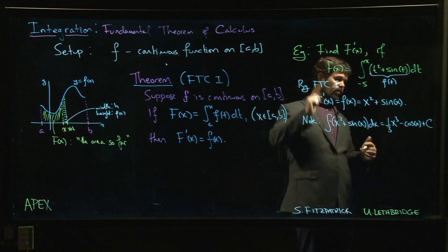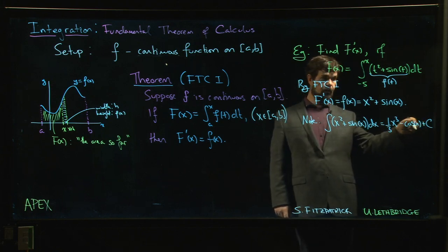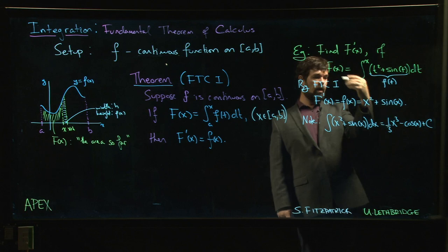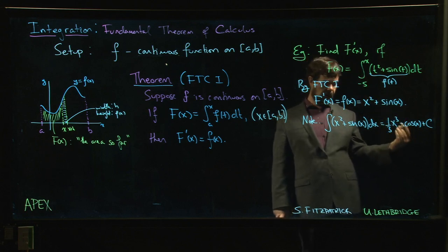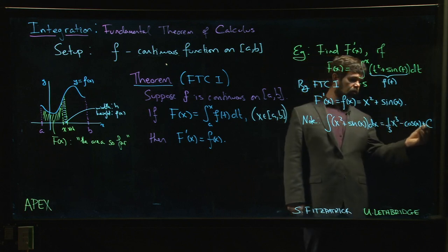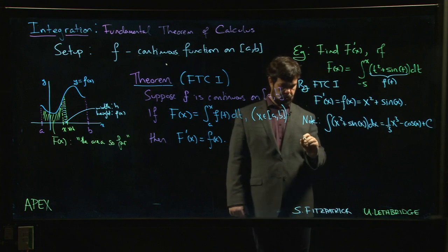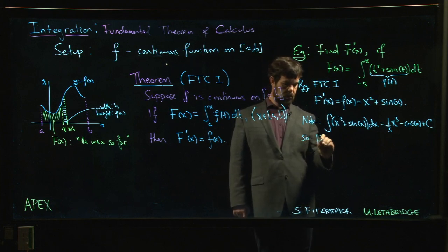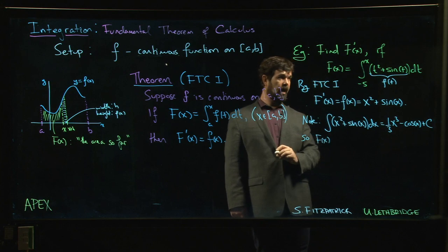So the difference between this and this is possibly in that constant of integration. We know that any two antiderivatives have to differ by a constant, so we know that big F is given by this for some c.